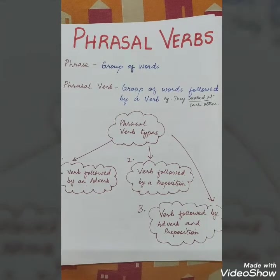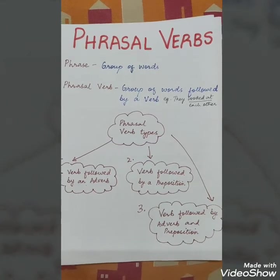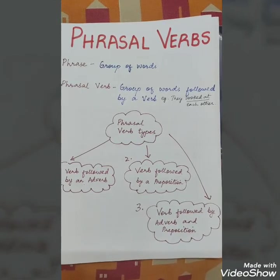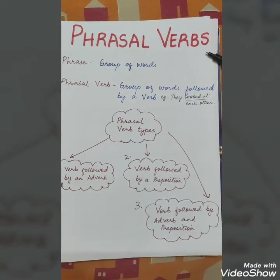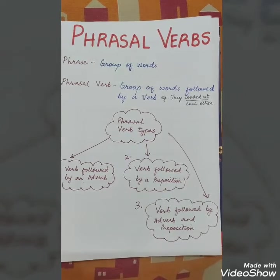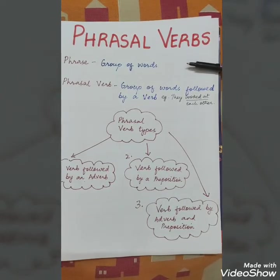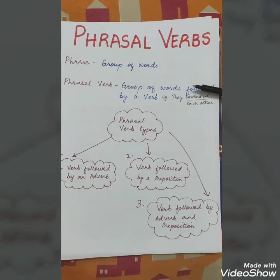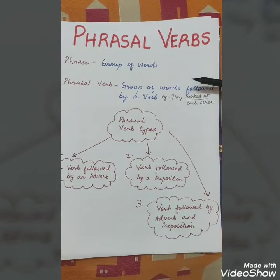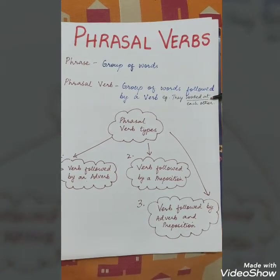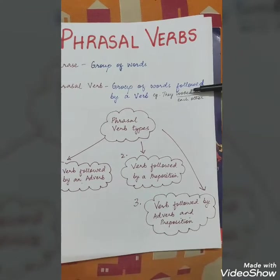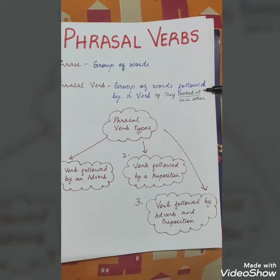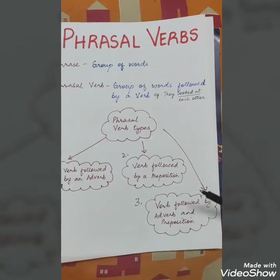Good morning children, welcome to another session of your virtual English class. Today we will learn about phrasal verbs. We have finished phrases earlier, so what are phrases? Phrases are nothing but a group of words, and a phrasal verb is nothing but a group of words with a verb. For example, 'they looked at each other' — here 'looked' is the verb and it is followed by the word 'at', therefore it is a phrasal verb.